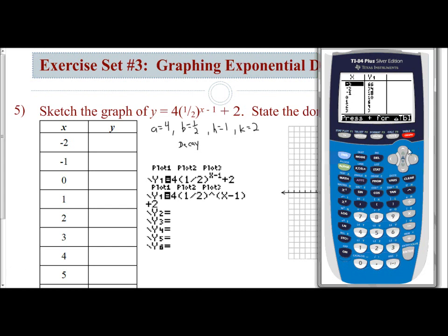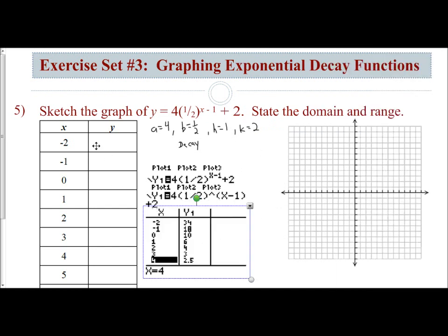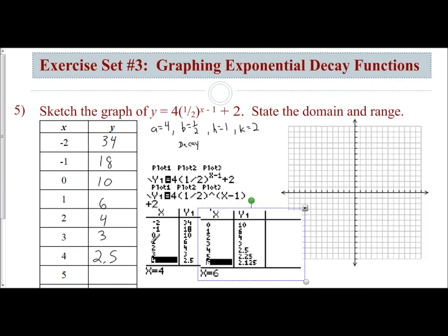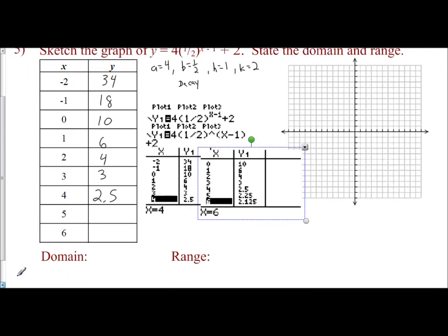I'm going to grab my table of values. It looks like I want from negative 2 to 6. So I'm going to grab from negative 2 to 4 first. From negative 2 to 4, I have 34, 18, 10, 6, 4, 3, and 2.5.